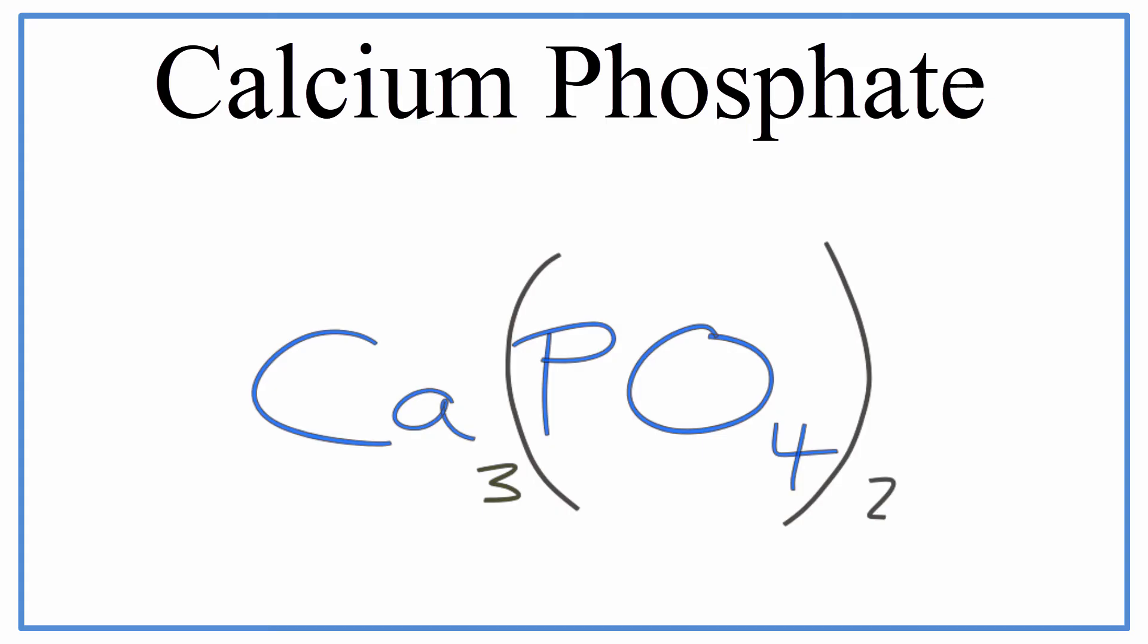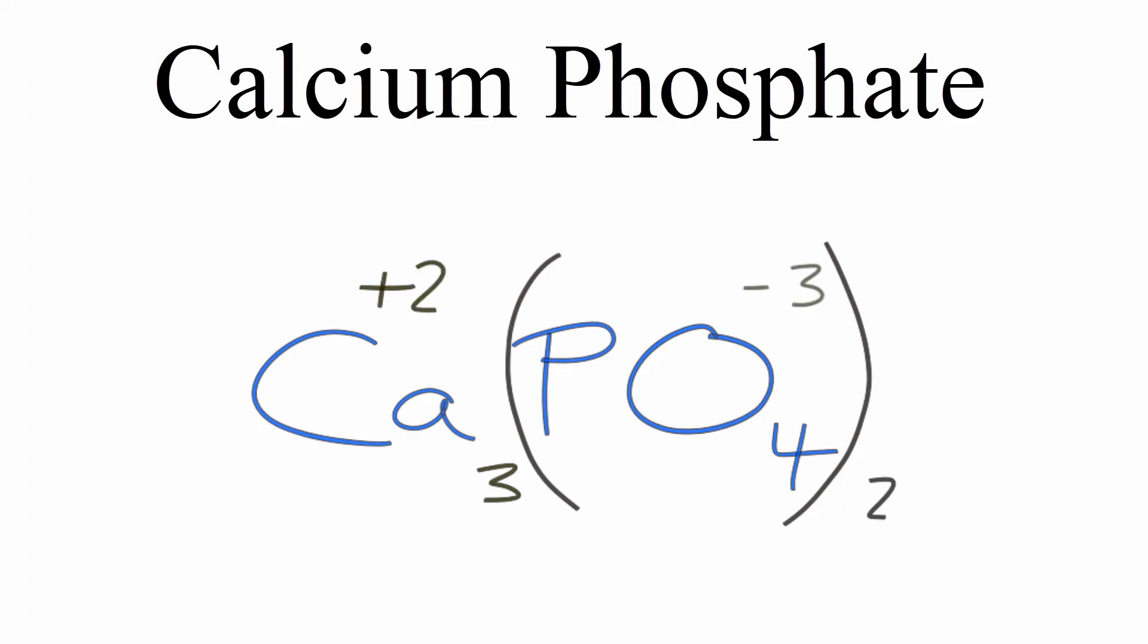I do want to check it though. So recall that our charges for the calcium, that was plus two. And then for the phosphate we had a minus three. So we want the total charge on this molecule to be zero, have a net charge of zero. Three times plus two, that gives me a plus six.